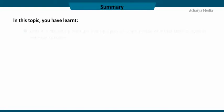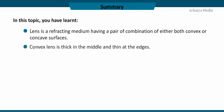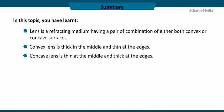In this topic, you have learned that a lens is a refracting medium having a pair or combination of either both convex or concave surfaces. Convex lens is thick in the middle and thin at the edges. Concave lens is thin at the middle and thick at the edges. The convex lens formula expresses the relationship between object distance, image distance, and focal length.